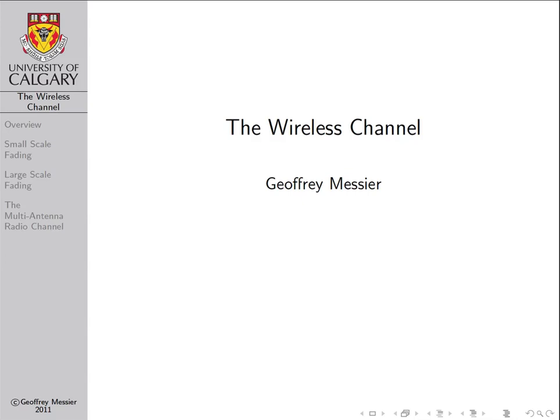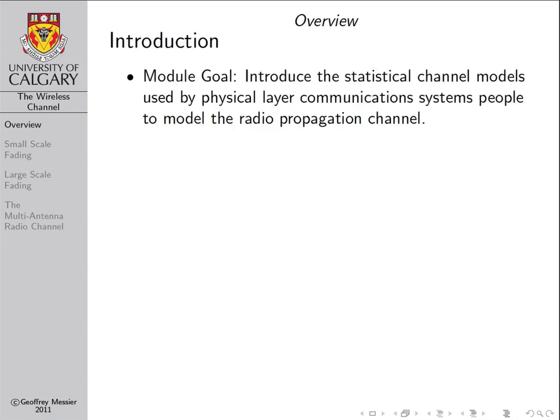The purpose of this module is to introduce all of the techniques and methods used to model the wireless channel. This is a very large module because there are a lot of different unique characteristics of the wireless channel that affect wireless system performance and therefore need to be modeled in an accurate way. We will be using this module to introduce the statistical channel models used by physical layer communication systems people to model the radio propagation channel.